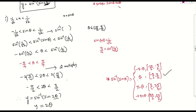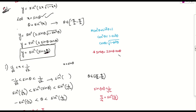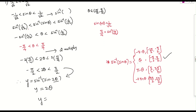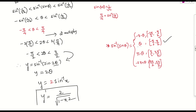Because 2 theta lies between minus 90 and plus 90, sin inverse of sin 2 theta equals 2 theta. Replacing theta with sin inverse of x, we get y equals 2 sin inverse of x. Therefore y dash equals 1 by root of 1 minus x square. This is the derivative when x lies between minus 1 by root 2 to 1 by root 2. First case is done.